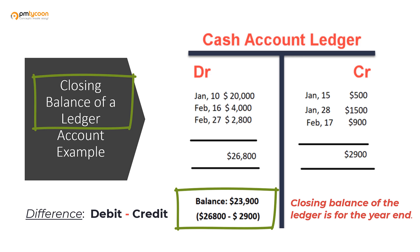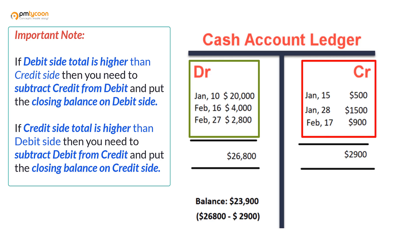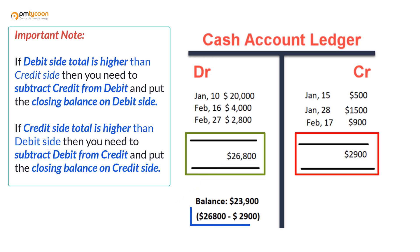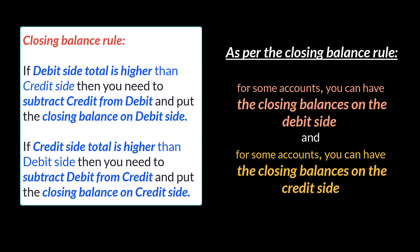The difference amount is called the closing balance of a ledger — the closing balance of a ledger for year-end accounting. Let's take the example of the cash account ledger on screen. We list all the debit entries on the left side and the credit entries on the right side. If we sum the debit entries we get a value of 26,800; if we sum all the credit entries we get a total of 2,900. The debit side is of greater value than the credit side, so the difference — the debit side balance — comes up as 23,900. This is called the closing balance of the cash account ledger for the year end.